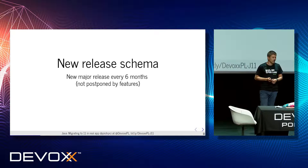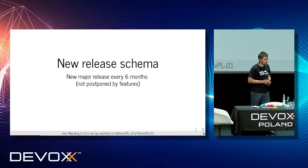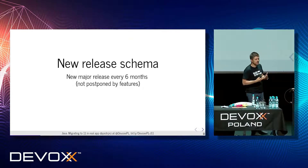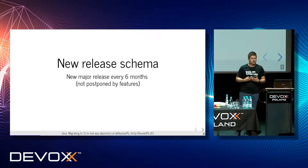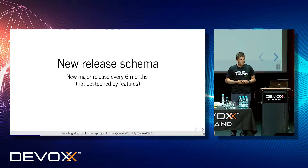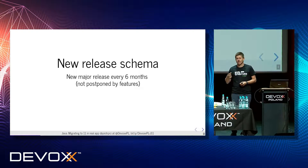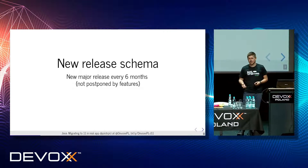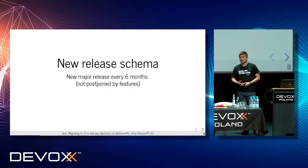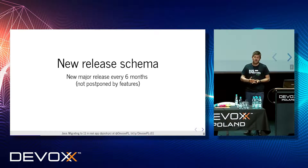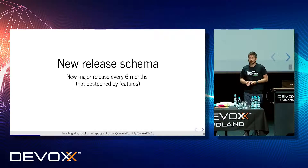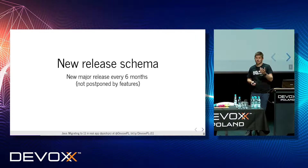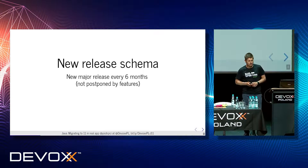There's a new release schema. A new major release of Java is released every six months, pretty much like Ubuntu. They are not waiting for features anymore — if a feature meets the timeline it's shipped, if it doesn't it has to wait for the next release, like raw strings in Java 12 which didn't make it, which is really bad news for me.